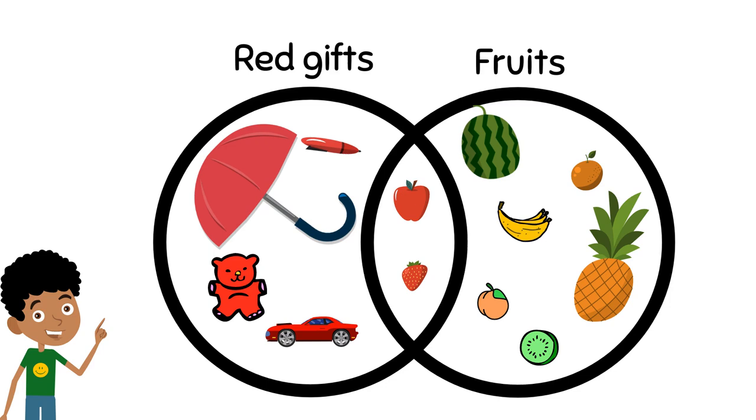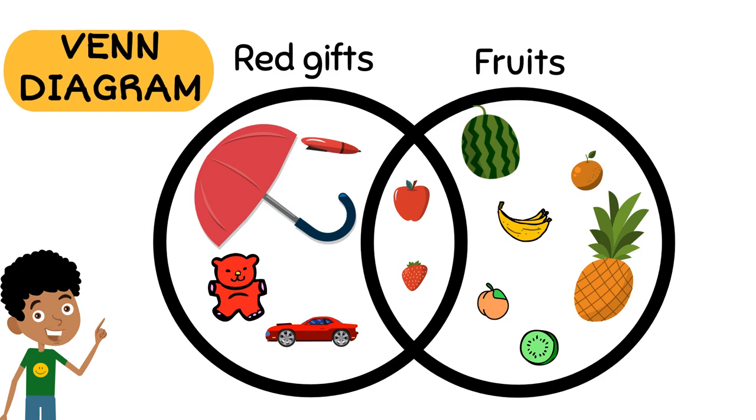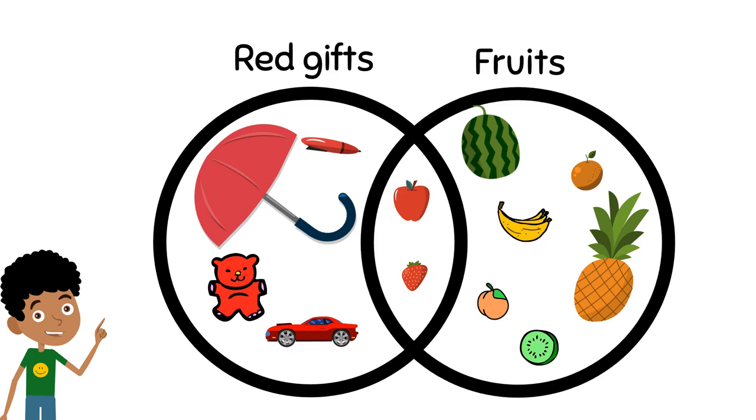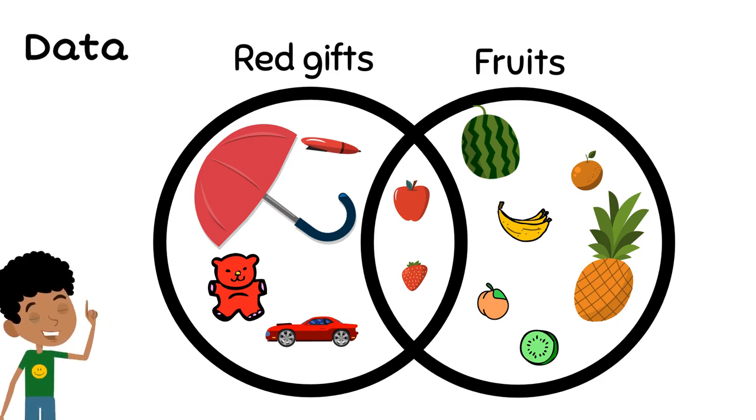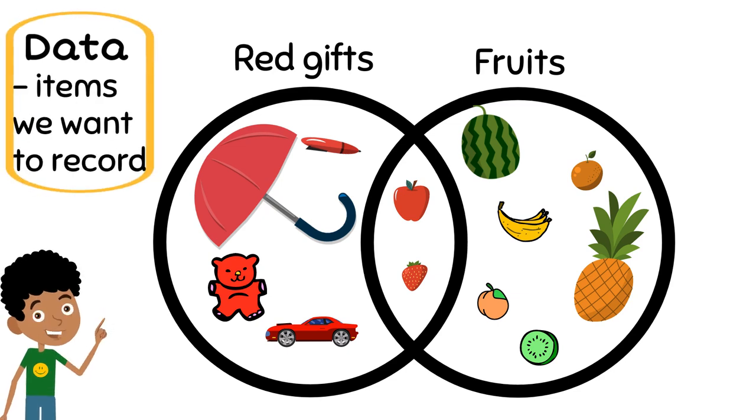What we see right now is called a Venn diagram. The items inside the circles, or Ivan's presents from his mom, are the data. In other words, data is any item or object that we want to list down or record.